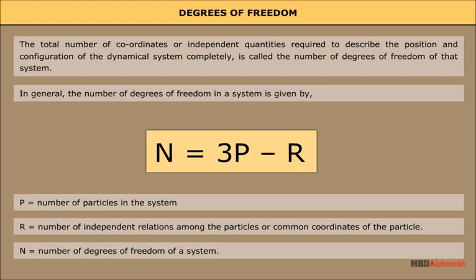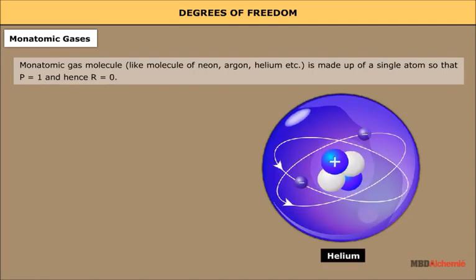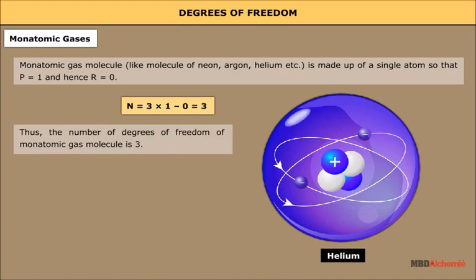Monoatomic gases: a monoatomic gas molecule like neon, argon, or helium is made up of a single atom, so P = 1 and hence R = 0. Therefore, n = 3 × 1 = 3. Thus the number of degrees of freedom of a monoatomic gas molecule is 3.